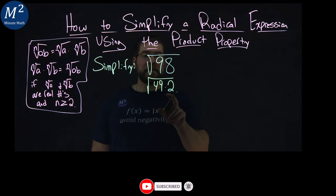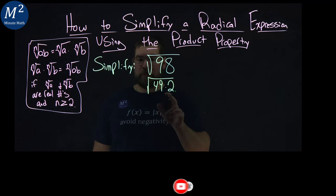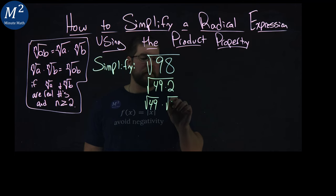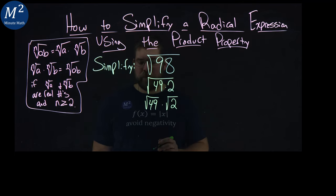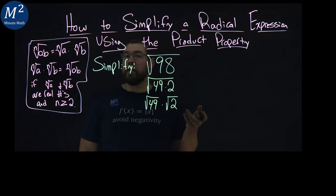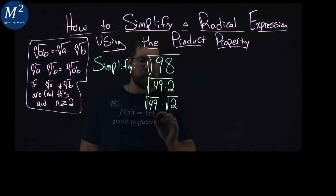From there we're allowed to separate these two. We have the square root of 49 times the square root of 2. And this is beneficial because we can easily take the square root of 49. Square root of 49 is just 7, and square root of 2 is square root of 2.